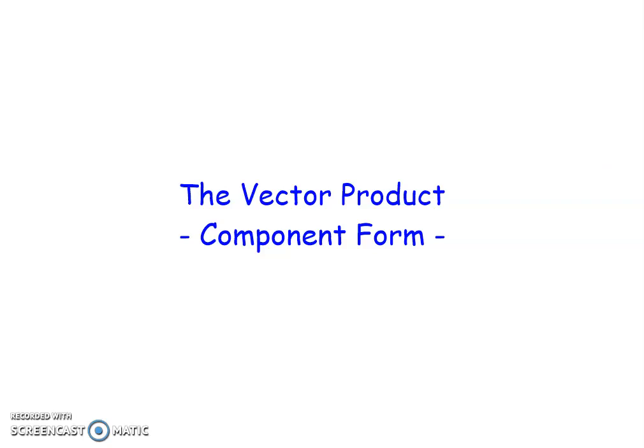Here what I want to do is look at the vector product and how we calculate this using component form. So that is when we get given a vector and we have all three or even just two components of that vector and another vector and how we can calculate what this vector that represents the normal to the plane which is defined by these two vectors is.